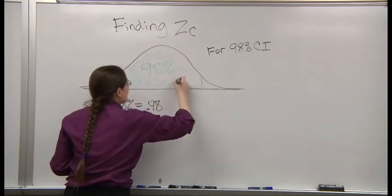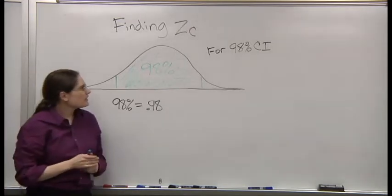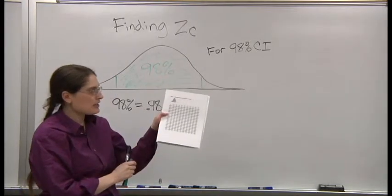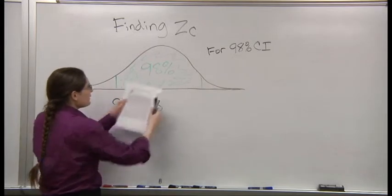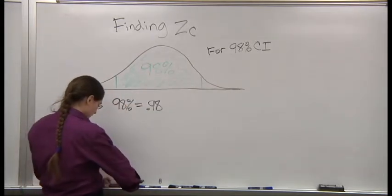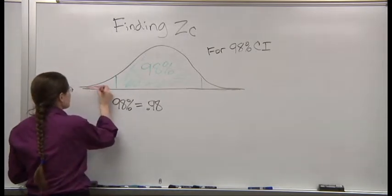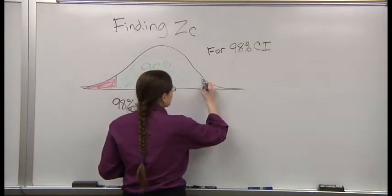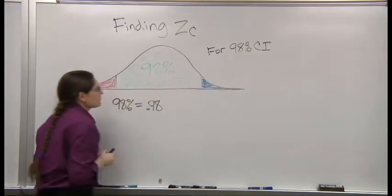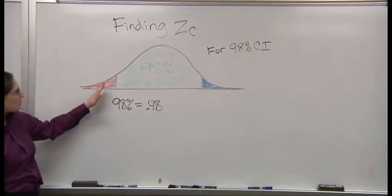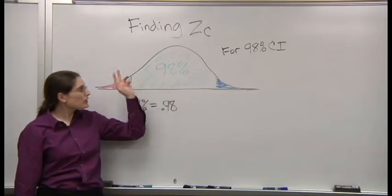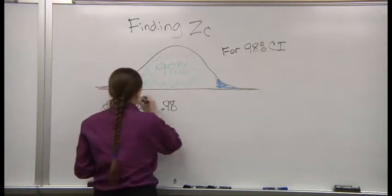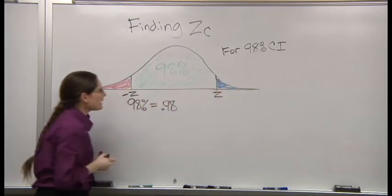The middle 98%. But the z-table doesn't tell you the middle 98%. It tells you the area to the left of a number. So we got the red part, the blue part, and the green part. And the total is one. And this graph is symmetric. This is negative z. This is positive z.